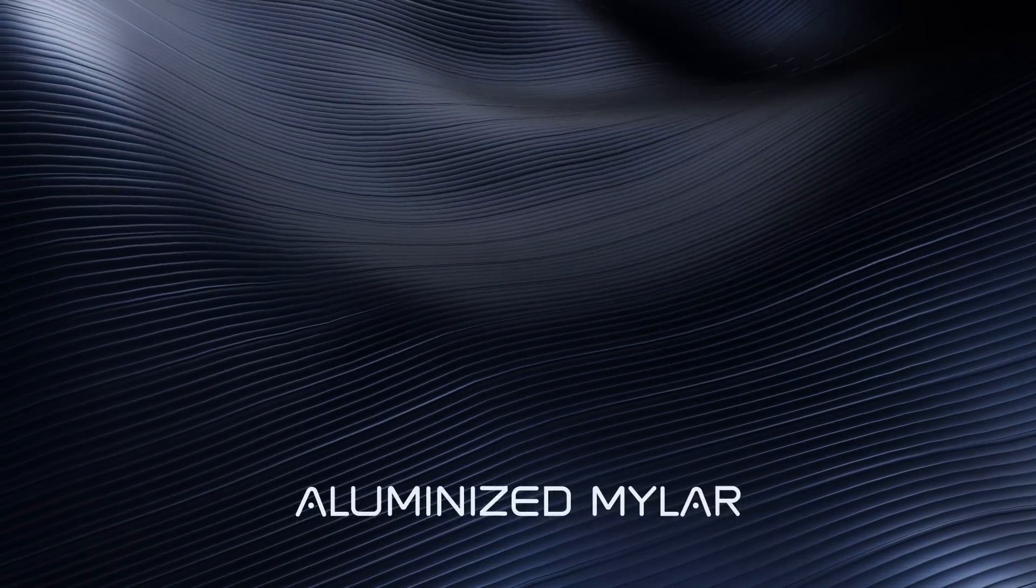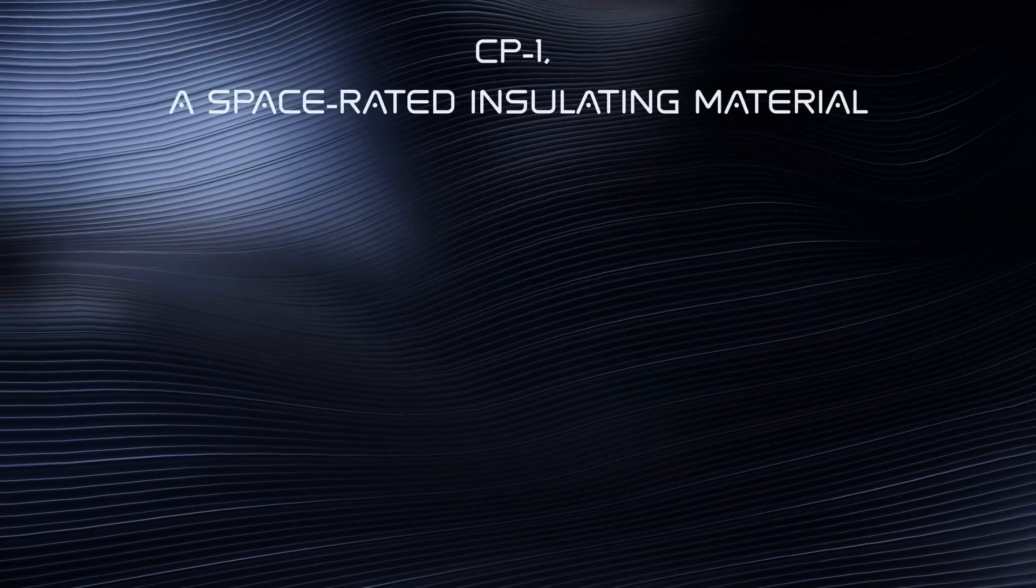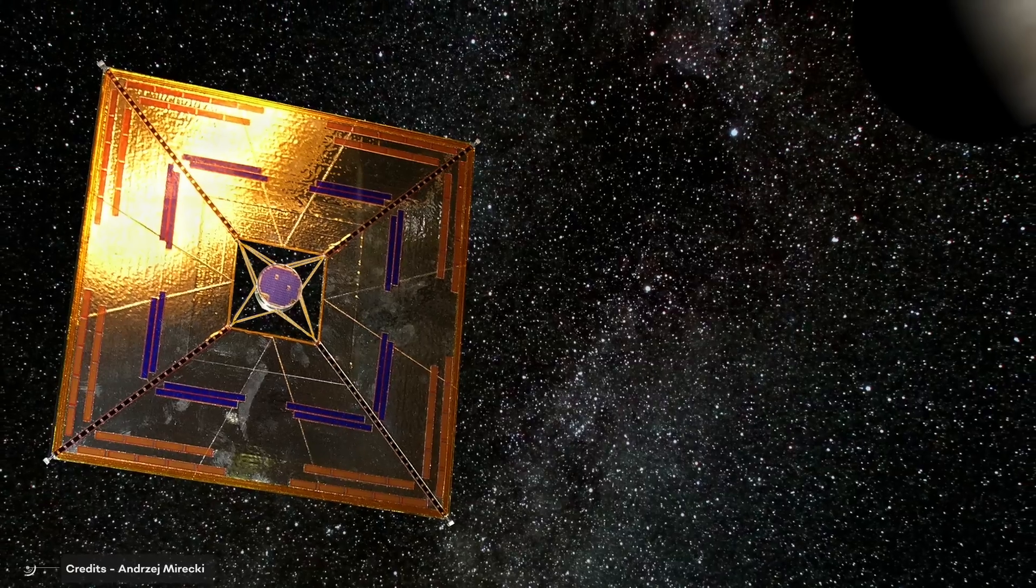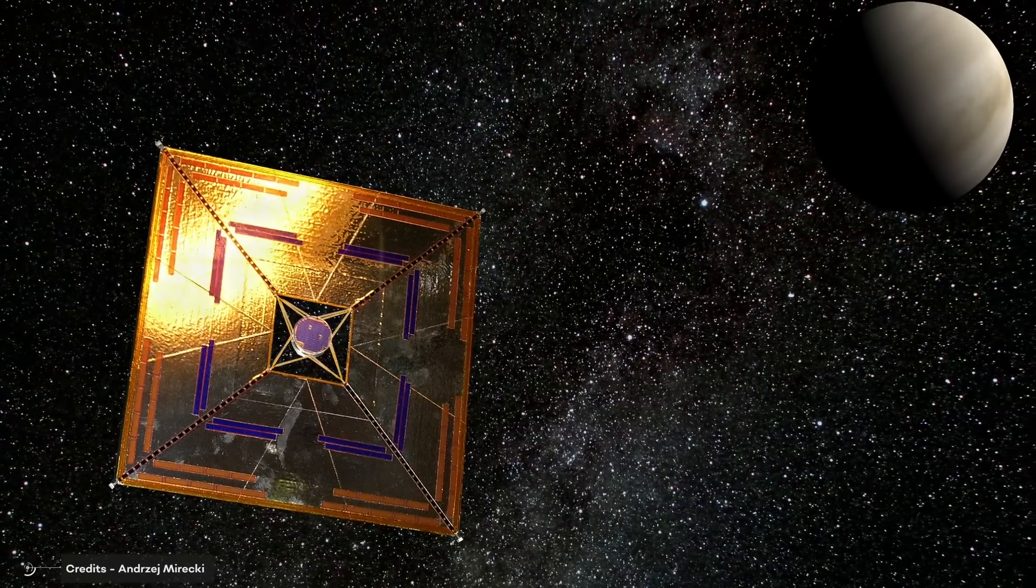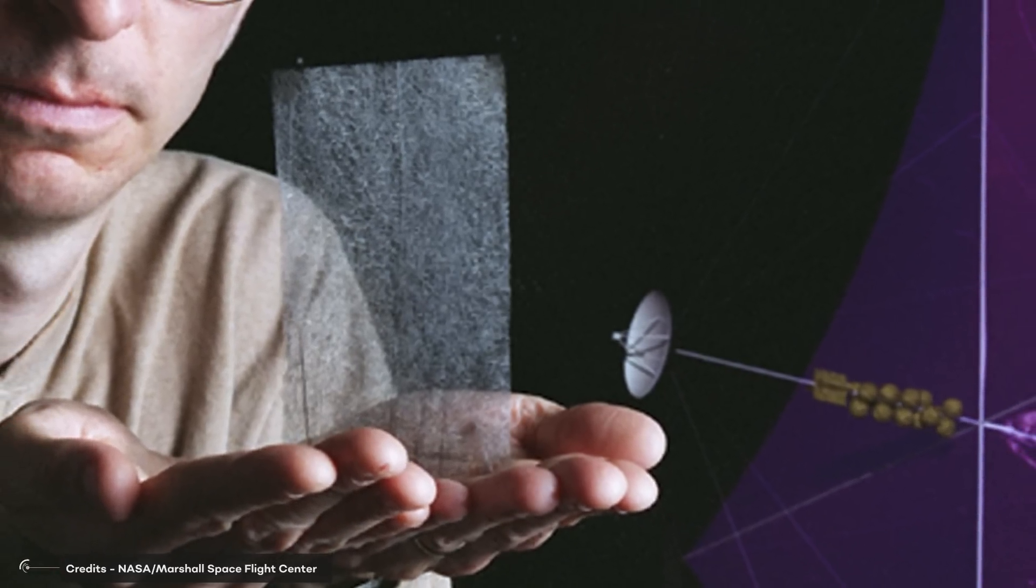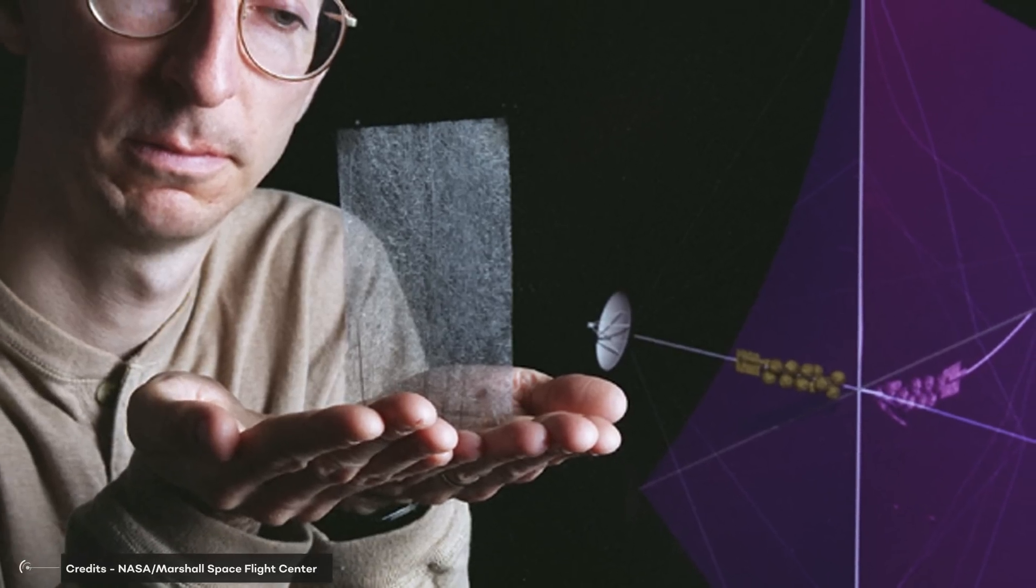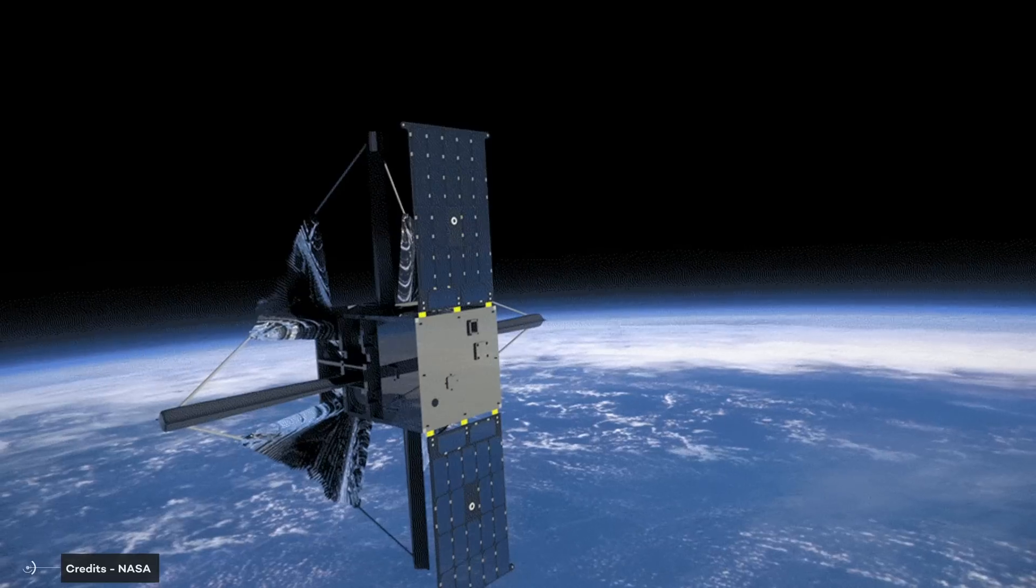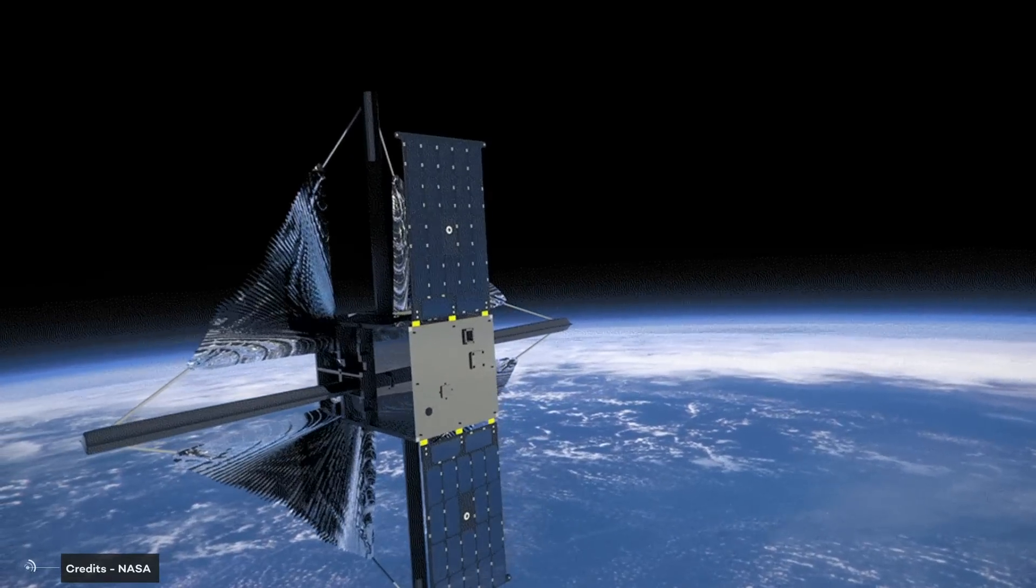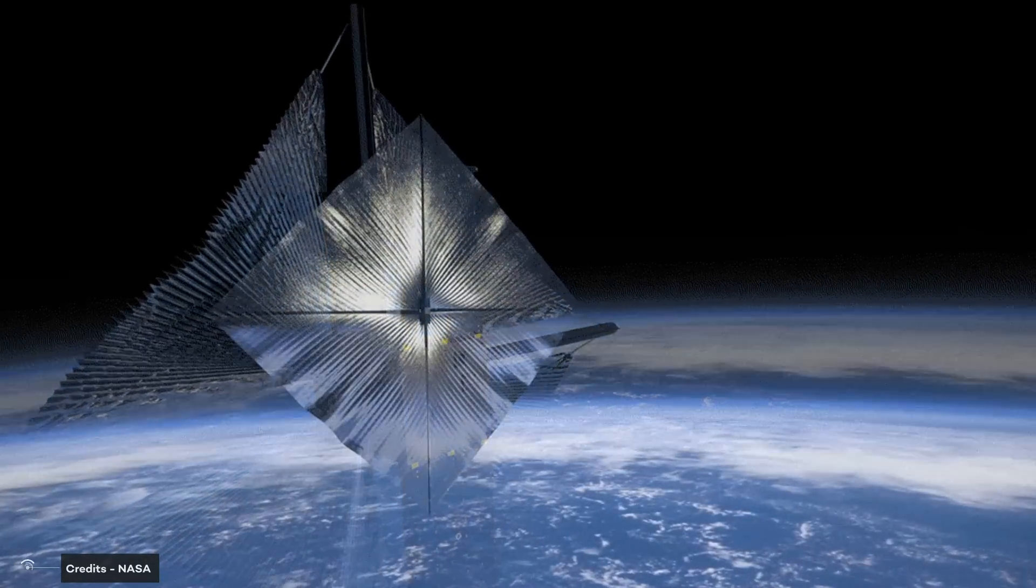Near-term sails likely will use aluminized mylar, a strong and thin polyester film, or maybe CP1, a space-rated insulating material. Both are proven materials previously flown in space. In the future, more robust sails could be made out of carbon fibers. The latter offers the most durability, but can be more expensive to produce. Each of these materials has its own strengths and weaknesses, and the type of sail to be used will depend on the mission.